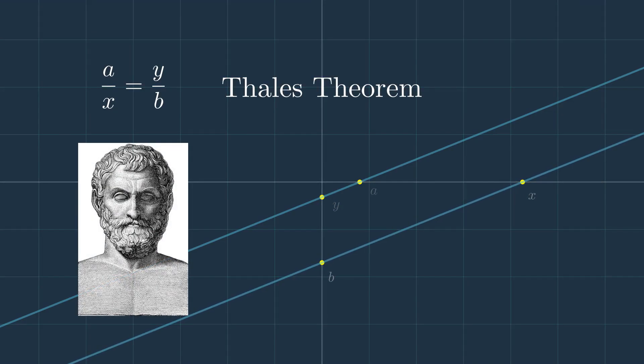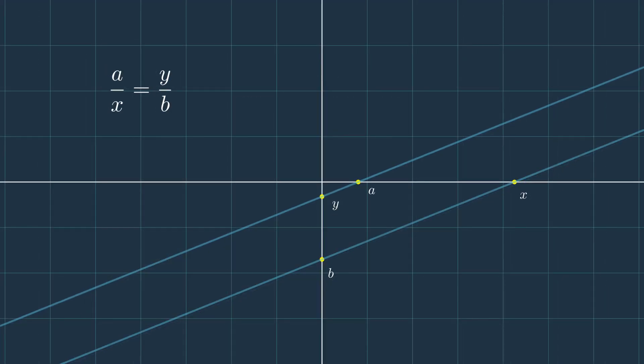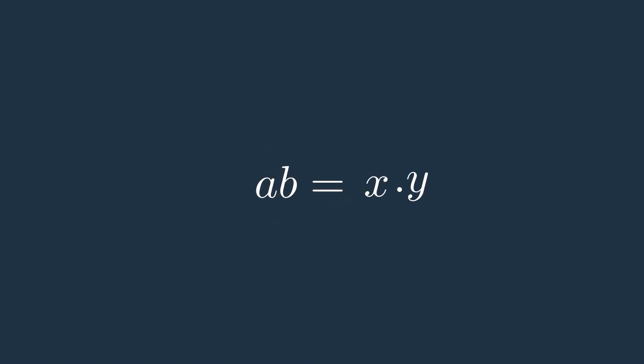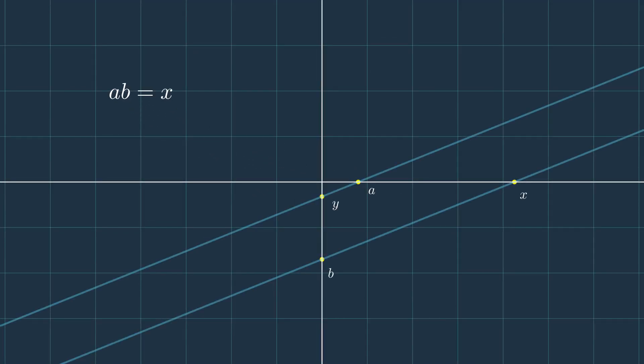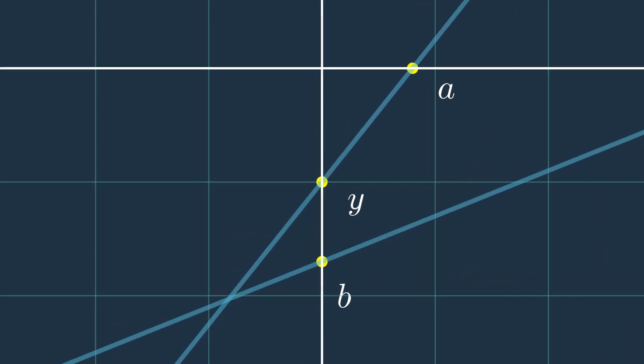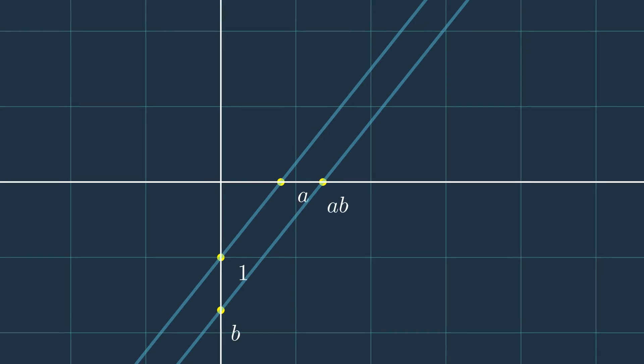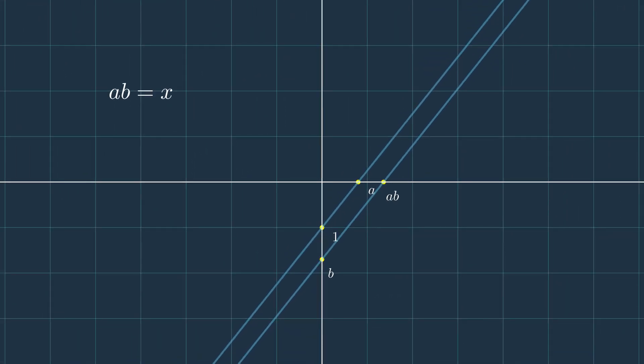This is also known as the Thales theorem, an ancient Greek mathematician who lived in the 600 BC. Now returning back to our equation before, we can see that if we change the value of y to 1, we will find a times b is equal to x times 1, which is x. That means that if we change the point y to be equal to 1, by respecting the parallelism, x will be convergent to a times b. Now, no matter how the value of a and b changes, we can have the value a times b graphically without using any calculation. And this is part of what we are going to build.